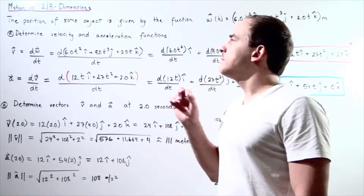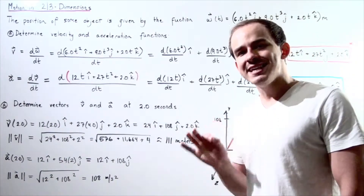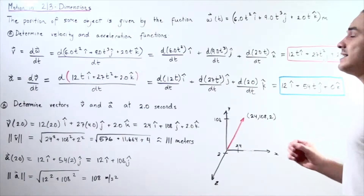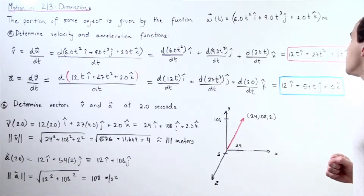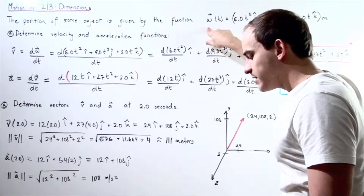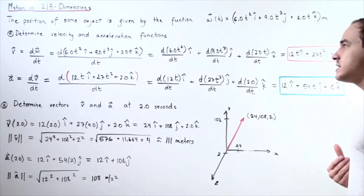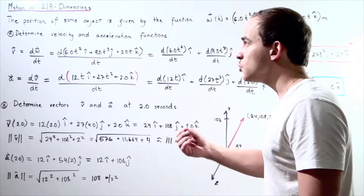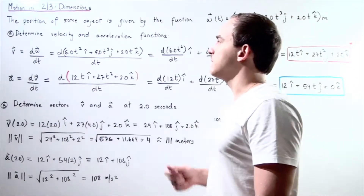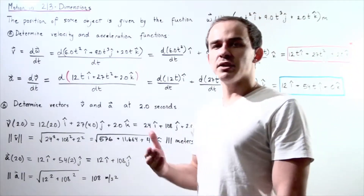Let's look at our example. The position of some object is given by the following function: W of t, where W is our displacement and t is our time, is equal to 6.0t squared times i-hat plus 9.0t cubed times j-hat plus 2.0t times k-hat. The whole thing is given in meters. Our W gives us the displacement after some given amount of time. If we want to find our displacement vector after 2 seconds, we simply plug in 2 and solve. We can also use this to find the magnitude and direction of our displacement vector.